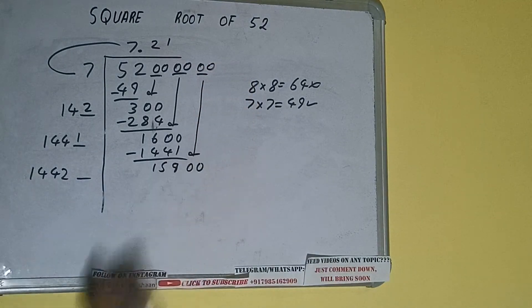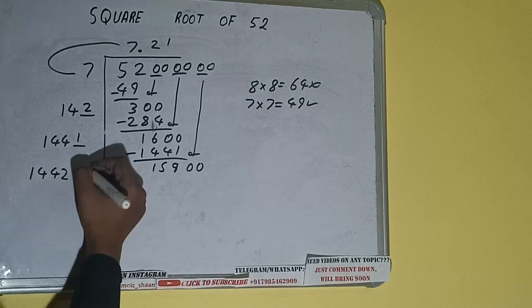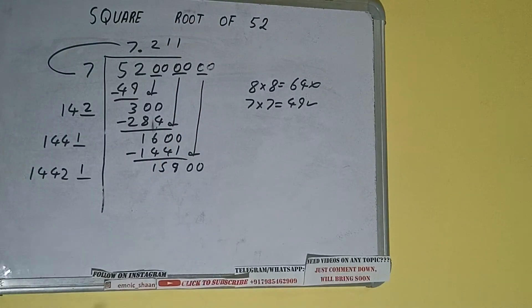So bring the next pair of zeros down and it will be 15,900. So we can write 1 here and 1 here, but we don't need to calculate.